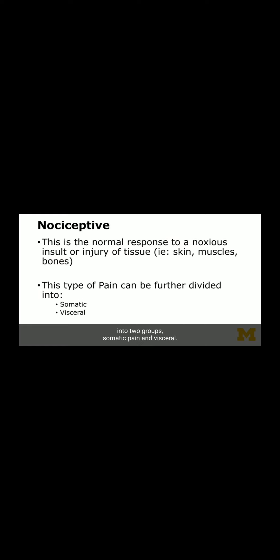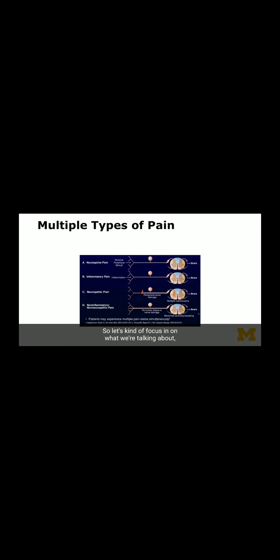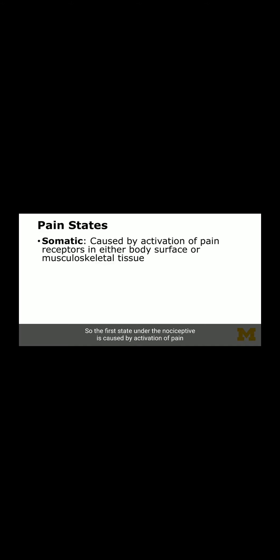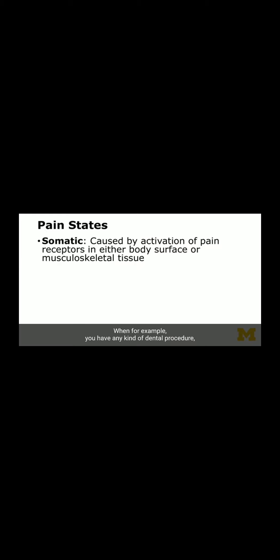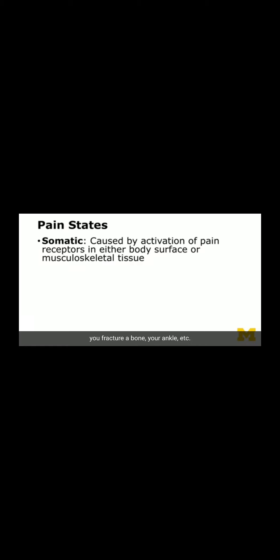Focusing on somatic pain: you have a noxious peripheral stimulus coming in, subdivided into somatic and visceral. The somatic state is caused by activation of pain receptors in either the body surface or musculoskeletal tissue. Examples include when your body is cut by surgery or accident, any kind of dental procedure such as a root canal or molar removal, as well as any bony structure abnormality such as a fracture.